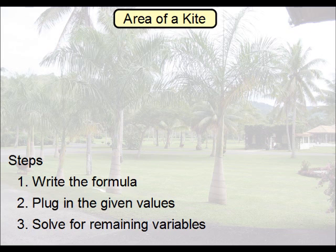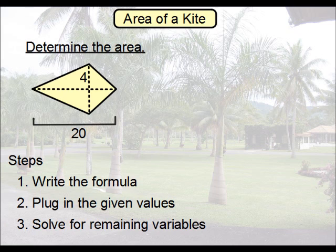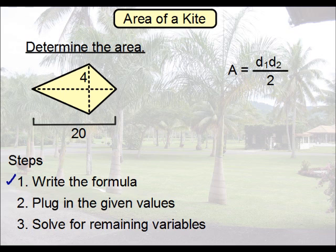Let's do a second problem. Let's determine the area of this particular kite. Again you'll want to start off by writing the formula. Then to plug in our values you might note that this entire diagonal here is 20 so that will be one of them. The other one though is not going to be 4. You'll notice that 4 stretches only to here. But the entire diagonal is going to be twice that which means that 8 is what we would use to plug in.